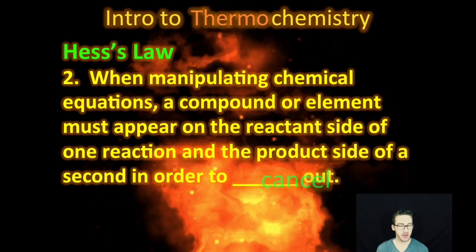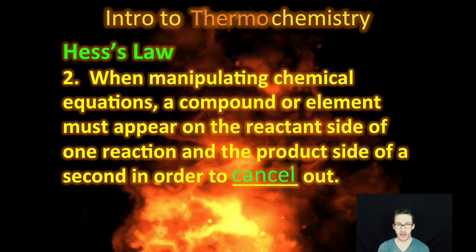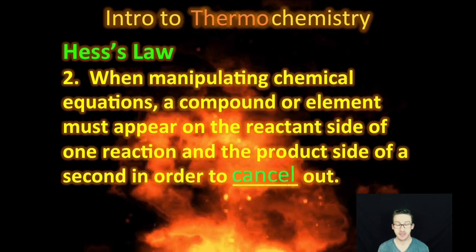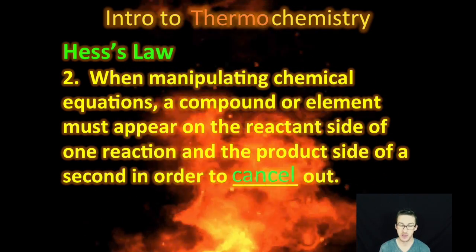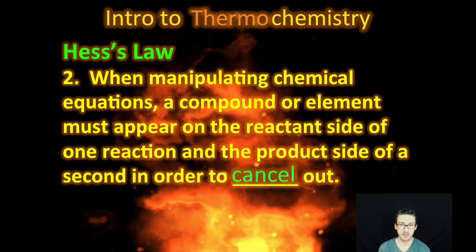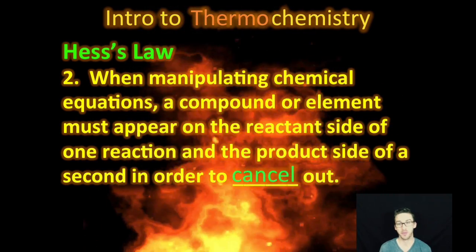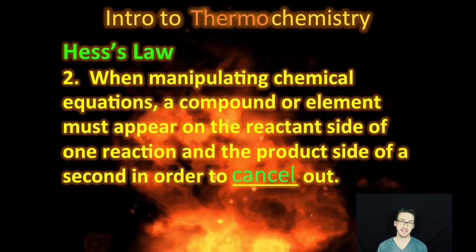And then ultimately, again, you'll be manipulating these chemical equations, you'll be reversing them, you'll be multiplying them by factors. Sometimes you'll have compounds or elements that are in the reaction that you need to get canceled out. And you can cancel them out as long as it appears on the reactant side of one of the reactions and on the product side of the other.